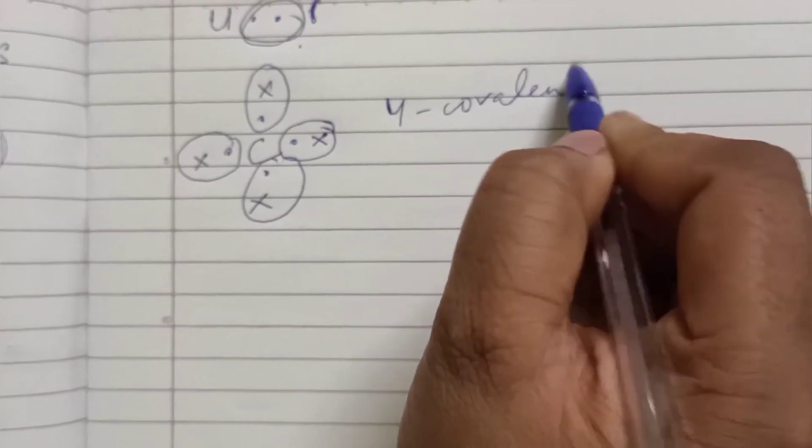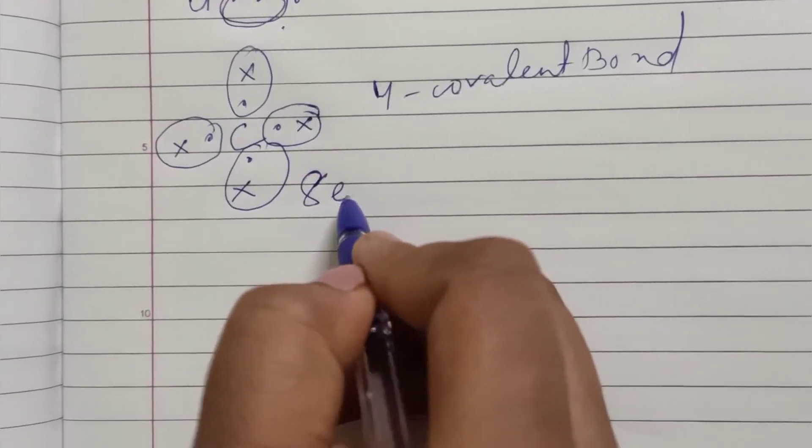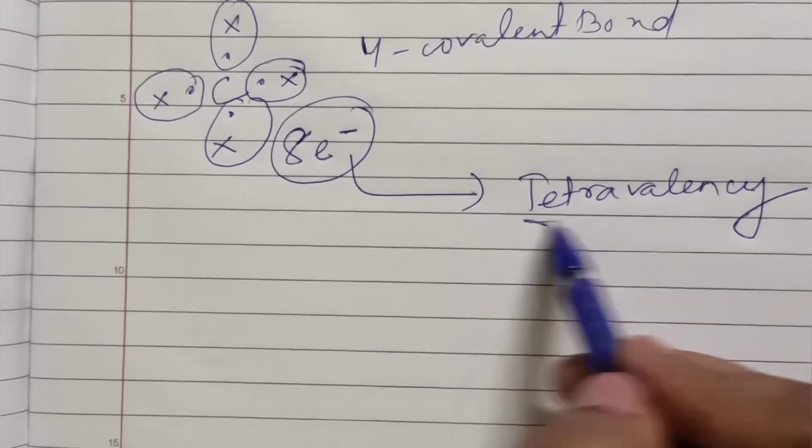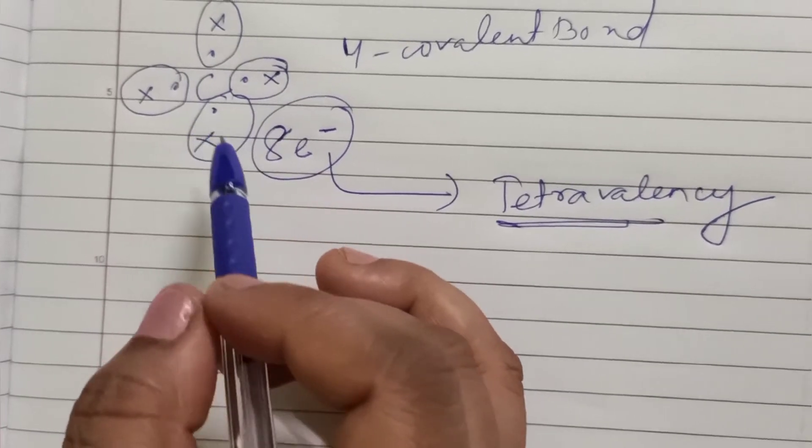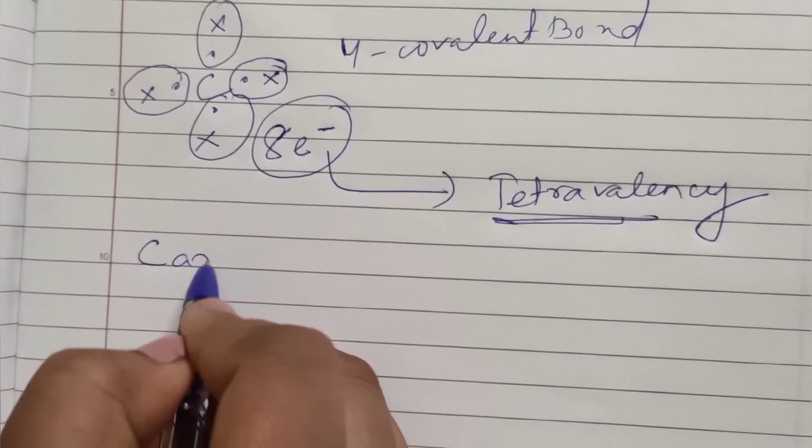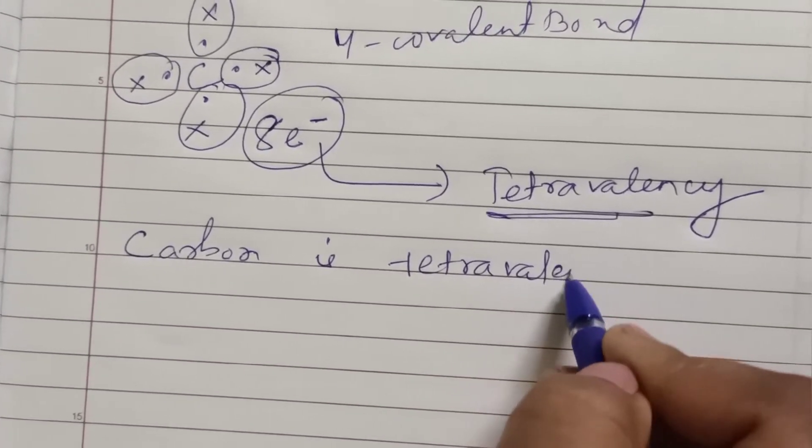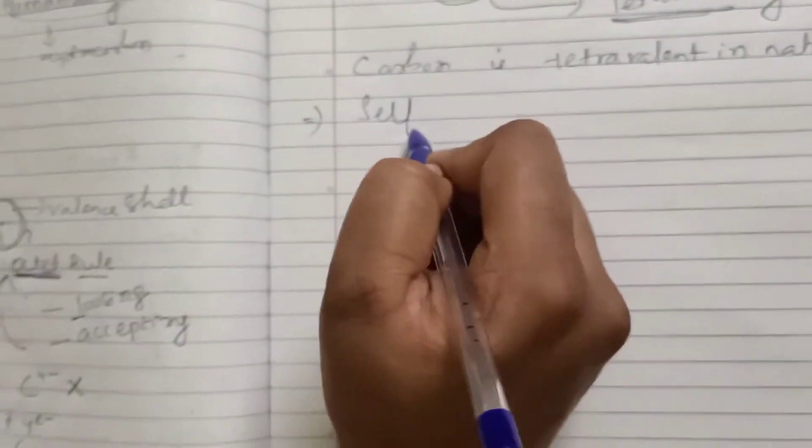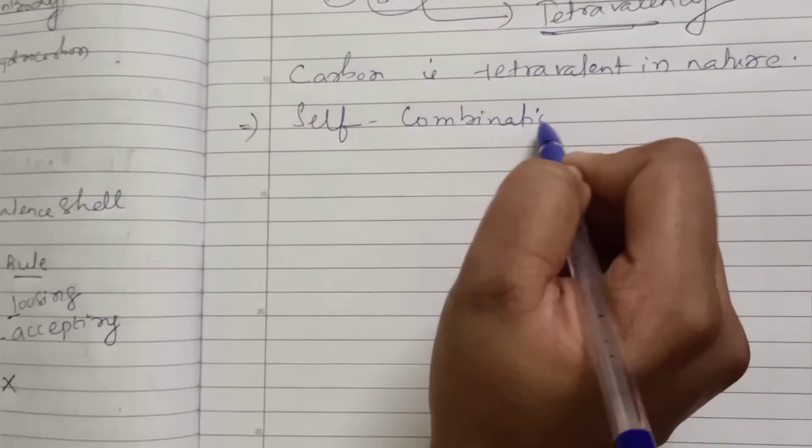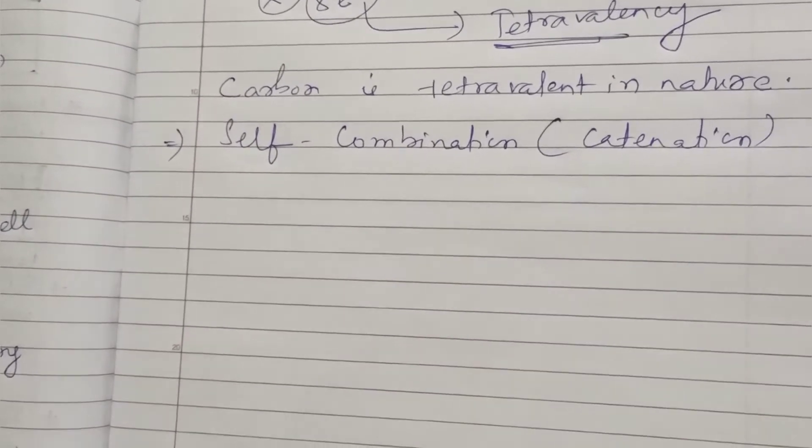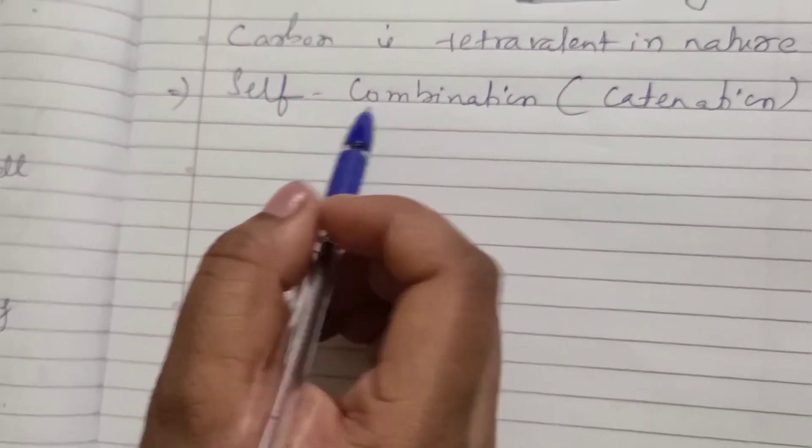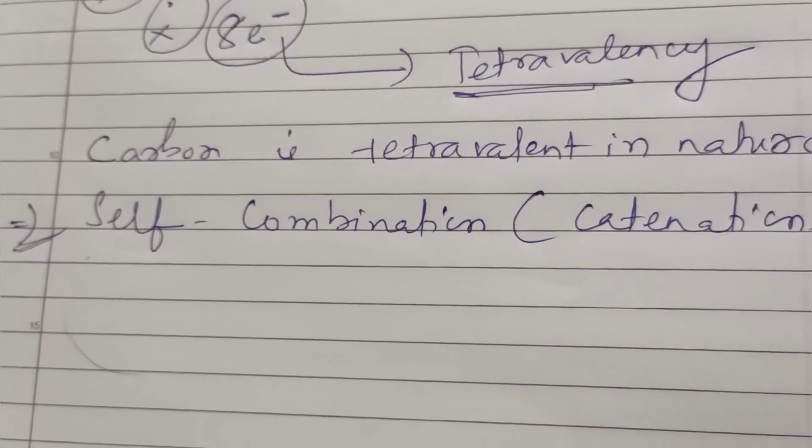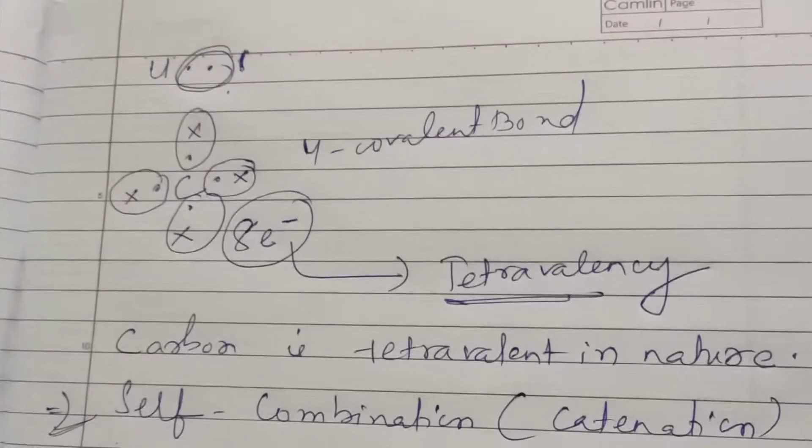This is called covalent bonding and forms four covalent bonds having eight electrons shared. This is called tetravalency. The total sharing of the eight number of electrons is called tetravalency, which means carbon is tetravalent in nature. Now moving to another property that is called the property of self-combination or the property of catenation. This I'm going to upload in my upcoming video. The next phase I will be uploading each and every phase with very little details so that it may make your study more easier and the understanding more clear.